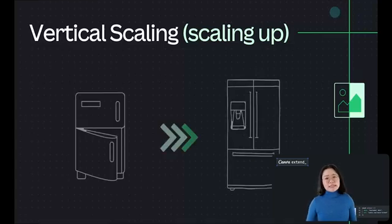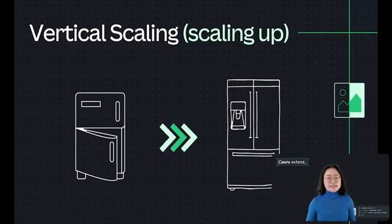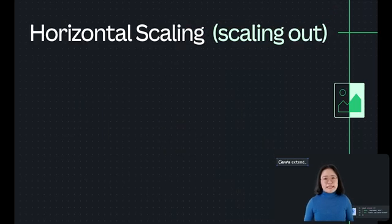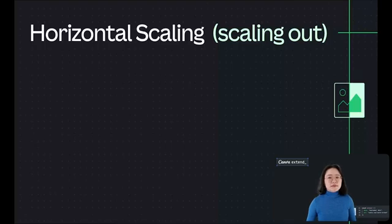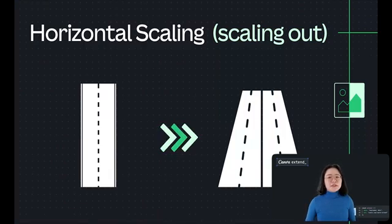Think of vertical scaling like upgrading your refrigerator. Instead of buying a second fridge, you get a more advanced model that has bigger space and better cooling efficiency for all your food. Horizontal scaling, on the other hand, is known as scaling out. It involves adding more nodes to your system, essentially distributing the load across multiple servers or instances. You can think of horizontal scaling like adding more lanes to a highway. By widening the road, you allow more cars to travel simultaneously, distributing the traffic to ease congestion and improving the flow. Similarly, adding more servers helps distribute the workload more effectively.